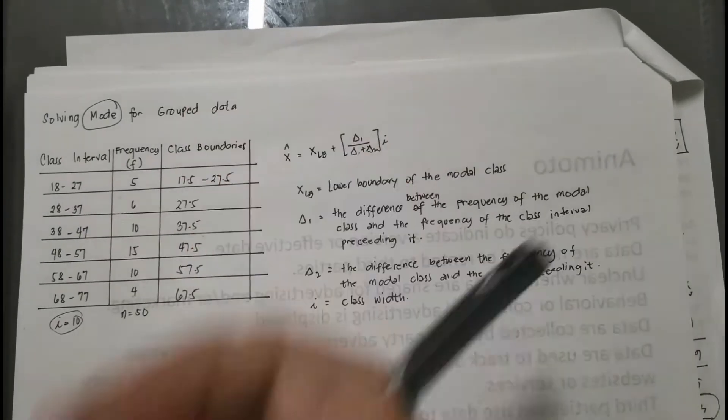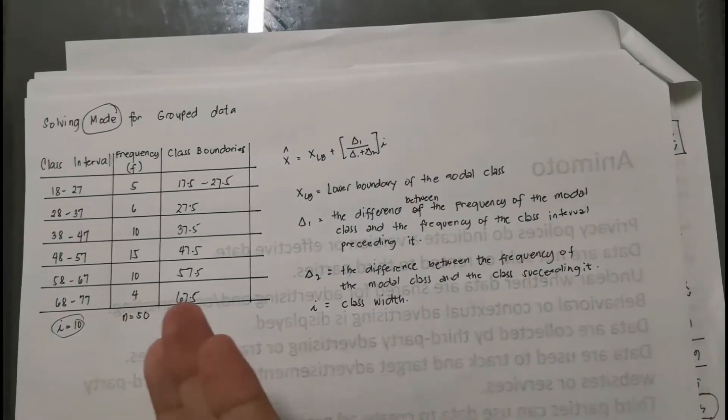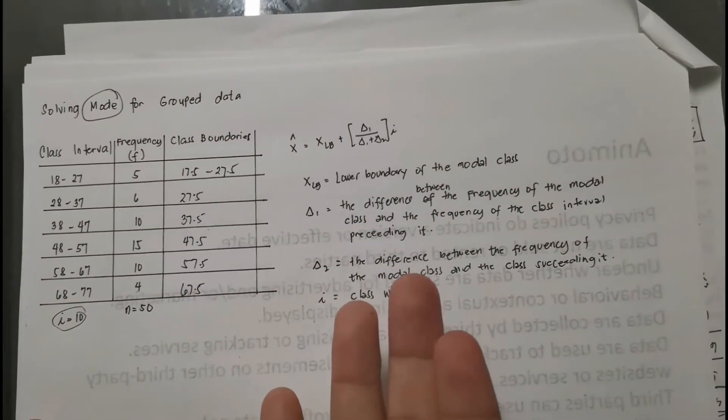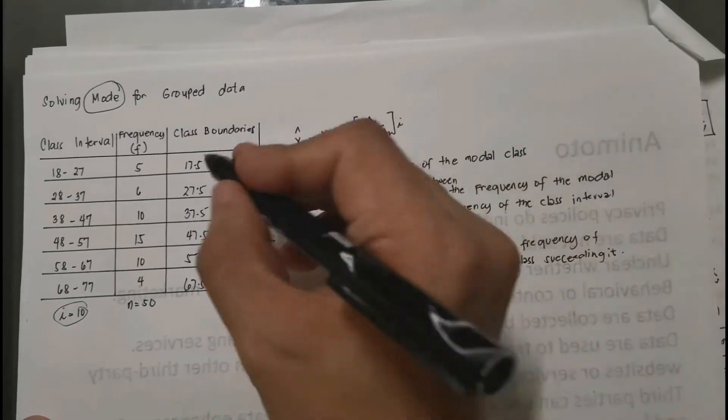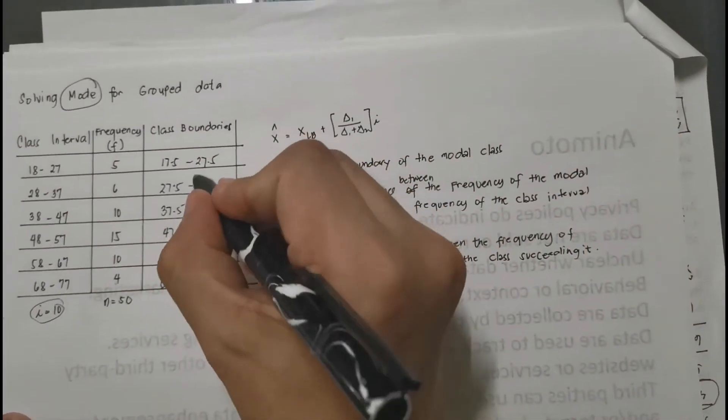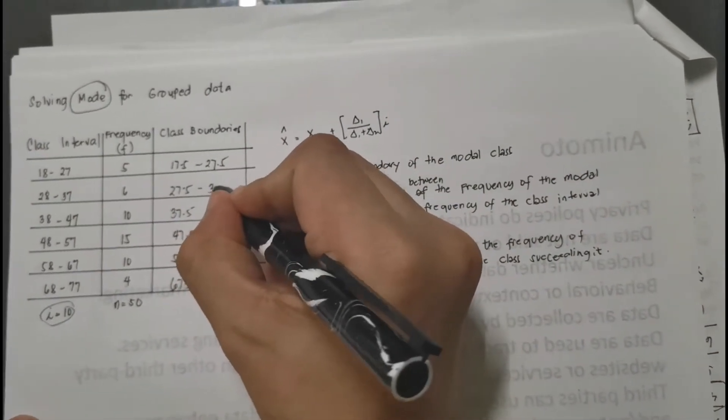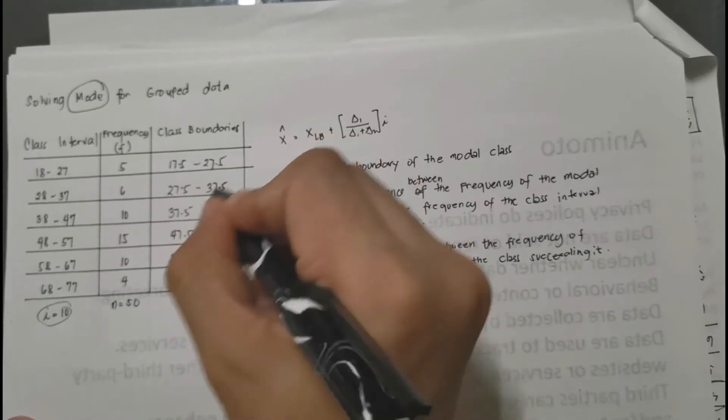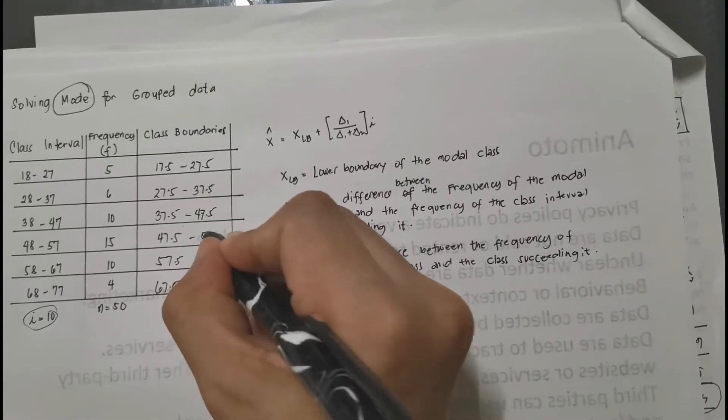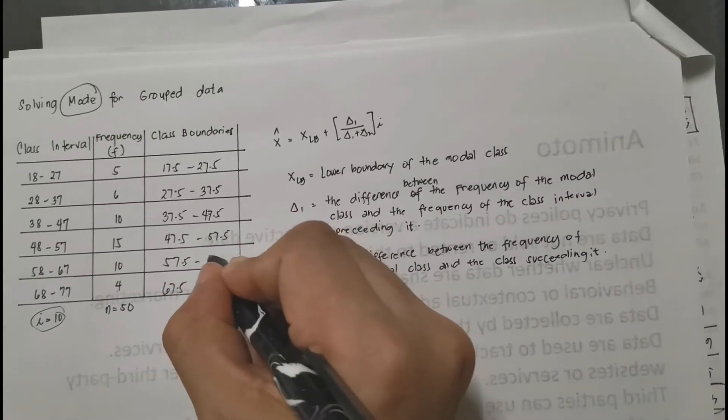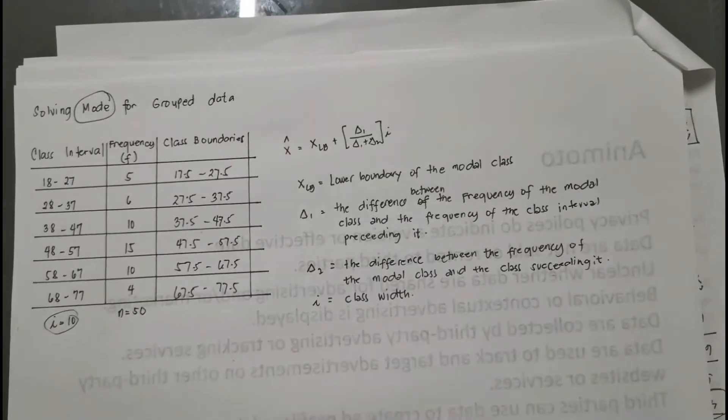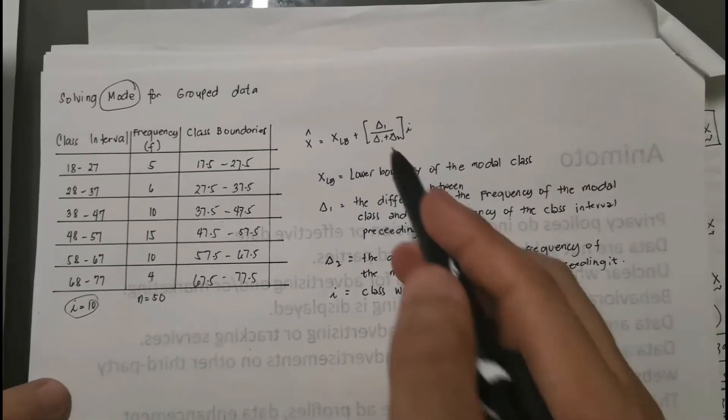Okay, we completed already the lower boundary of all the six intervals. Now to complete also the upper boundary, we will do the same thing. So that is 37.5. Okay, we completed the class boundary column.